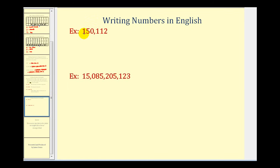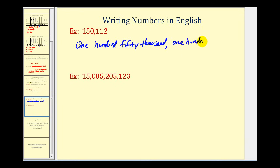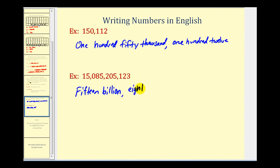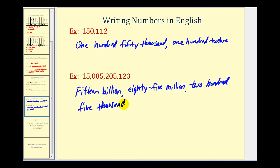Let's go ahead and try a couple of our own. So we have one hundred fifty thousand, one hundred twelve. Remember, we should not include the word 'and,' because 'and' represents a decimal point. And in our last example, we have the thousands, millions, and billions — so we have fifteen billion, eighty-five million, two hundred five thousand, one hundred twenty-three.